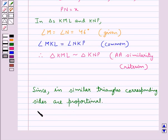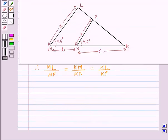Therefore, we have ML upon NP is equal to KM upon KN is equal to KL upon KP. Let's consider the first two.